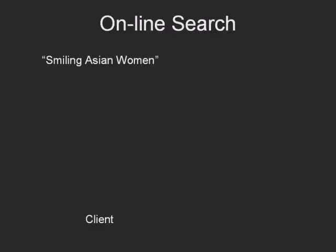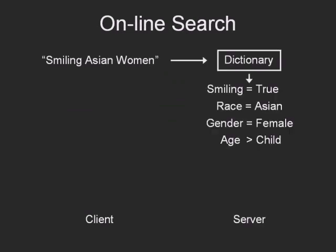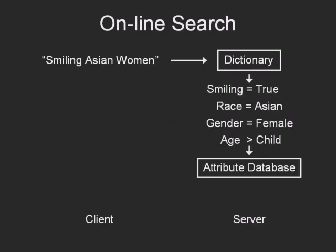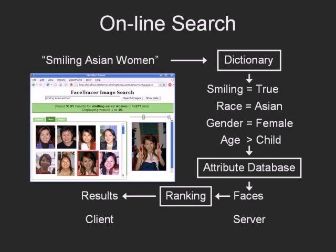When a user enters a query, the search terms are mapped to attribute labels using a dictionary. The attribute database is searched for faces matching all of the labels, and the faces are ranked by their confidences. The top results are then sent to the user.